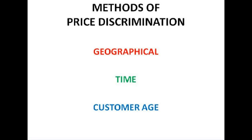Time is another method — different prices at different times of day. For example, train tickets are much more expensive at rush hour because demand is much greater so they know they can get more money. Basically, if we have different elasticities of demand at different times we can have price discrimination. Coffee is also an example — it tends to be more expensive at breakfast time when everyone wants to buy it.